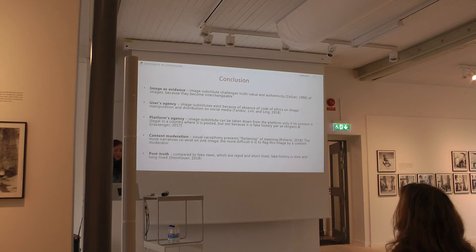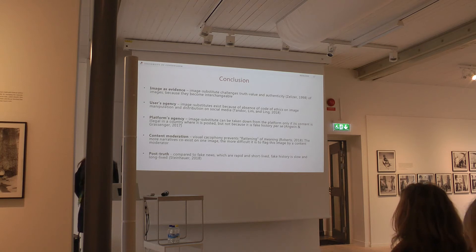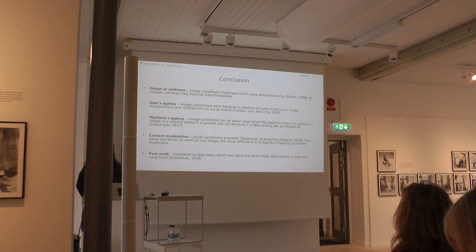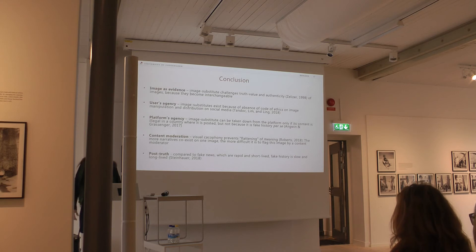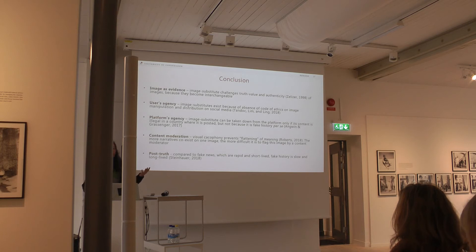I prepared five points. The first point is image as evidence. I think that image substitution challenges the truth value and authenticity of images, because images become interchangeable. The iconography of the Holocaust was created as starvation rather than extermination — these are Hannah Arendt's words — because all the people who were exterminated were already dead when the Allied forces arrived. So it becomes very easy to substitute iconographies that look familiar: bodies that are malnourished from one place can be used to portray bodies that are malnourished from another place.